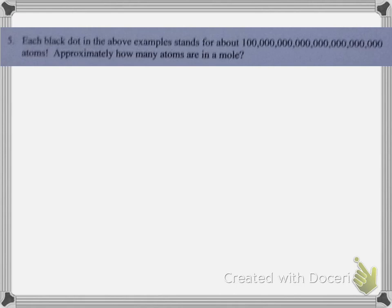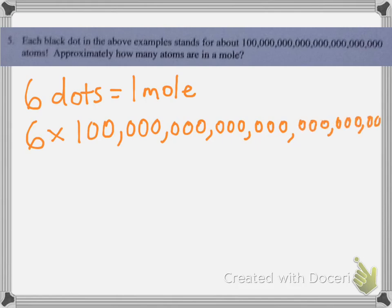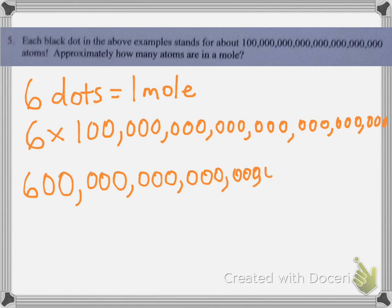Number five: each black dot in the above example stands for about that huge number of atoms. Approximately how many atoms are in a mole? We know that 6 dots equals 1 mole. So we're going to take 6 times this number — and we have 1, 2, 3, 4, 5, 6, 7 sets of zeros. So 6 times that number means I have all of those zeros: 3, 4, 5, 6, 7.